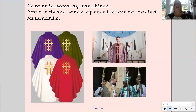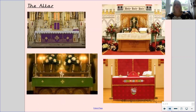Some priests wear special clothes called vestments. If you look here, you will see some of the different vestments that priests may wear. You will notice the colours change to represent the different time in the church year. The altar is decorated to represent the time in the church year. Here you can see how altars have been decorated with purple, with green, with white and with red.